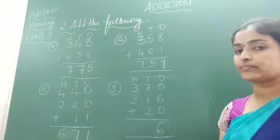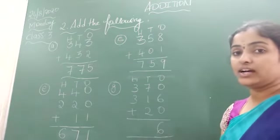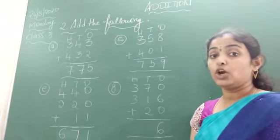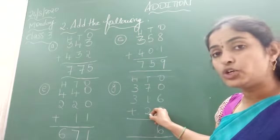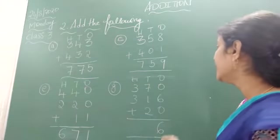7 plus 1 is 8. What is that? 7 plus 1 is 8. 8 plus 2? 10.